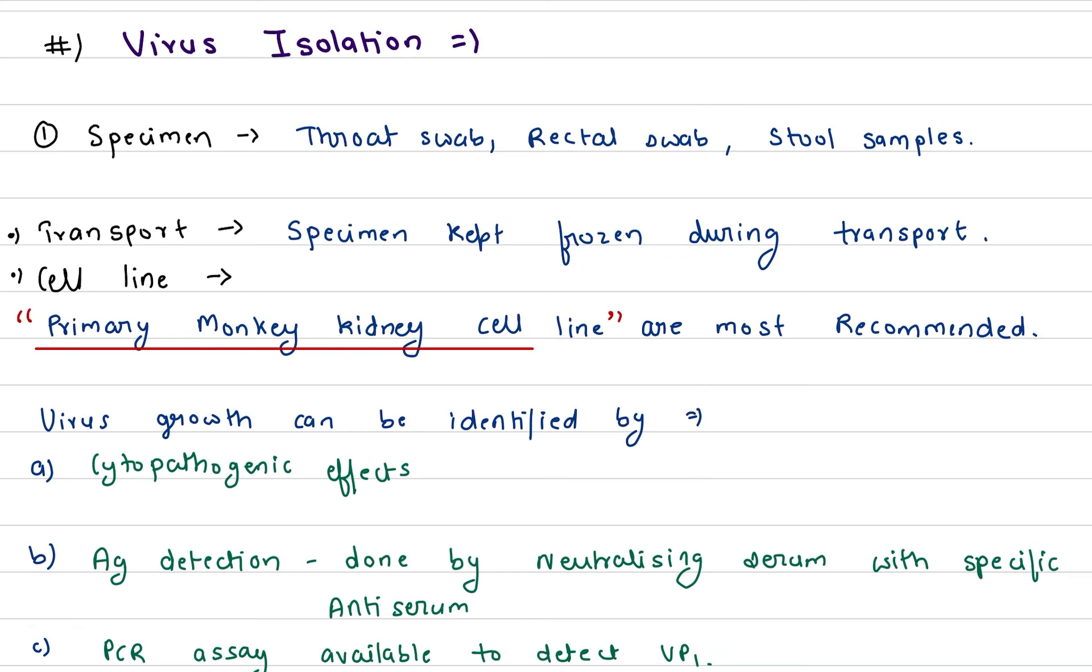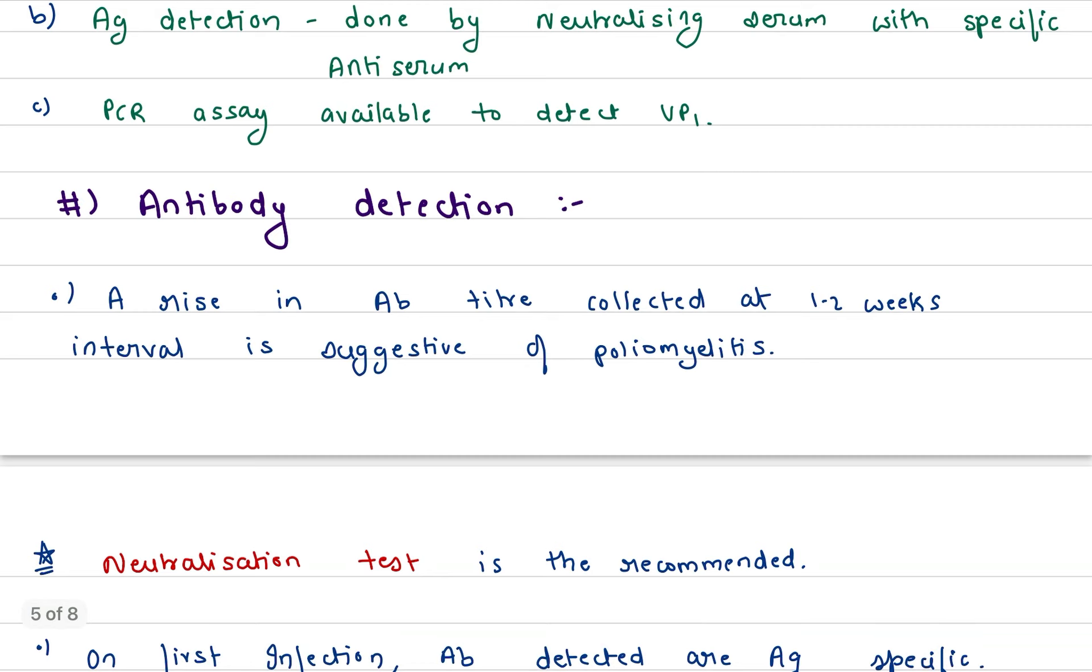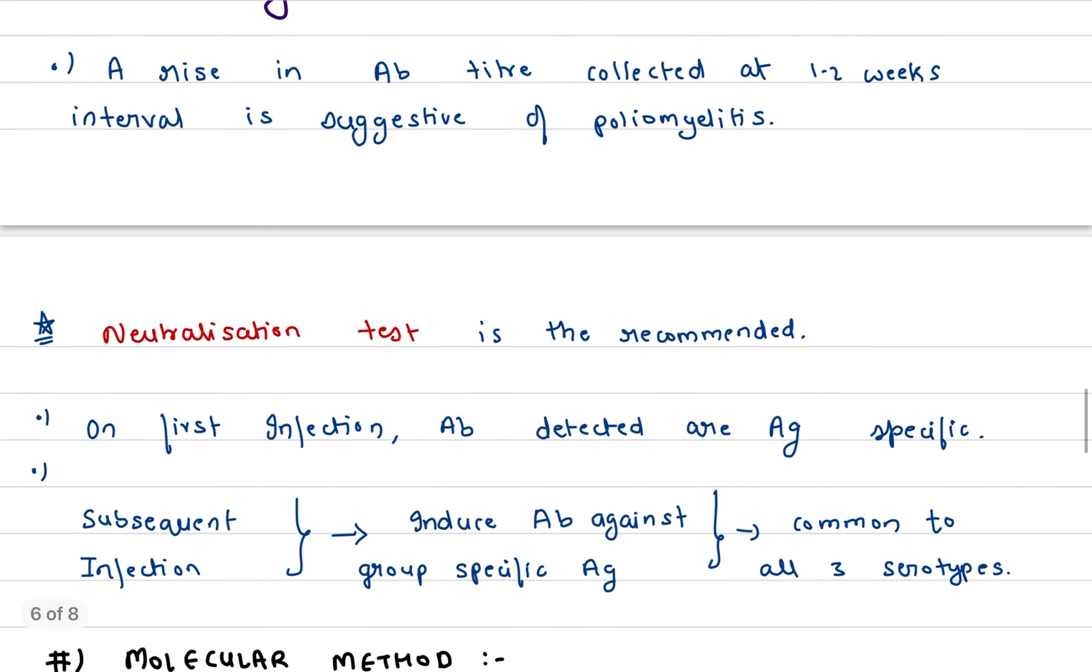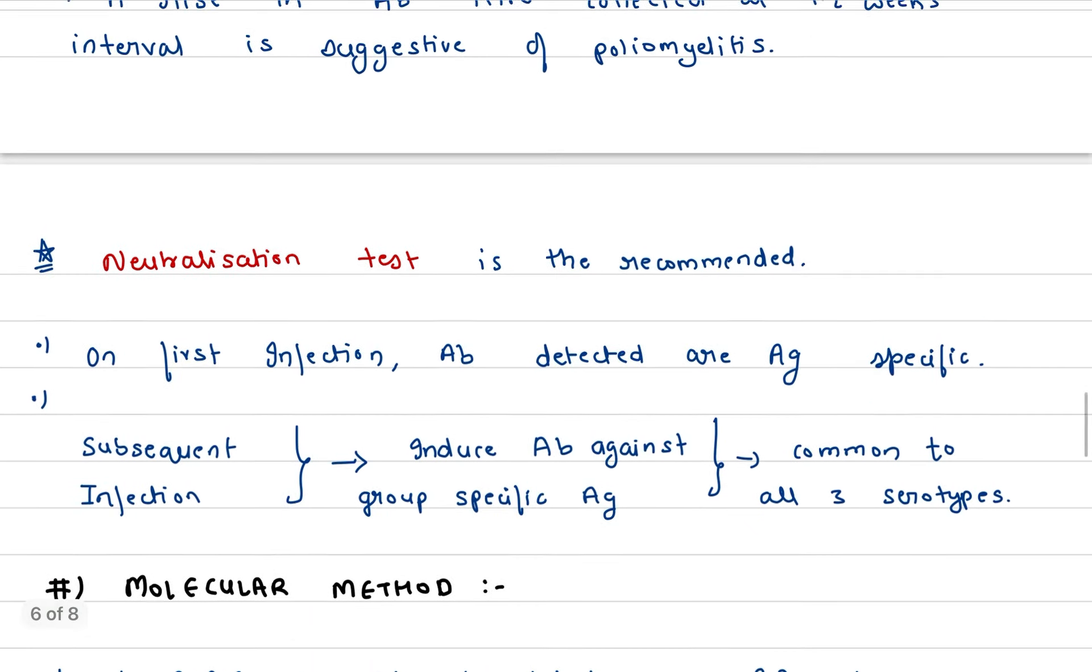Transport is necessary in the frozen state. Specimen kept frozen during transport. Cell line: primary monkey kidney cell line is used. This point is important. Virus growth can be identified by cytopathogenic effects. Antigen detection done by neutralizing serum with specific antiserum. PCR assay is available to detect VP1. Antibody detection: rise in antibody titer collected at 1 to 2 weeks interval is suggestive of poliomyelitis. So titer increase at 1 to 2 weeks interval when we collect it is suggestive of poliomyelitis.